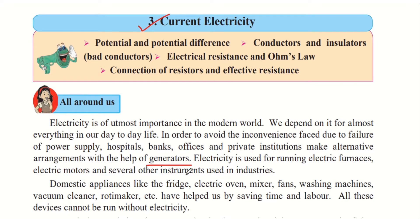Electricity is used for running electrical furnaces, electric motors and several other instruments used in industries. Domestic appliances like the fridge, electric oven, mixer, fans, washing machines, vacuum cleaner, roti maker etc. have helped us by saving time and labor — for example, a washing machine gets the job done faster and requires less effort.